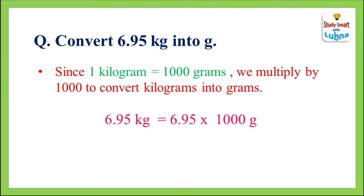Now we will convert 6.95 kilograms into grams. We will multiply 6.95 by 1,000 to convert into grams. Since 6.95 is a decimal number, in order to multiply a decimal number by 1,000, we need to shift its decimal point 3 places to the right-hand side.